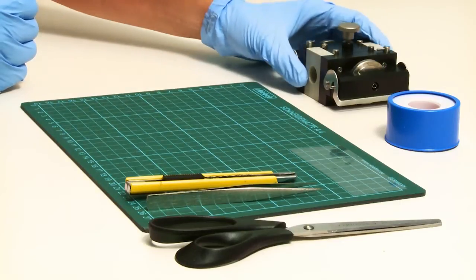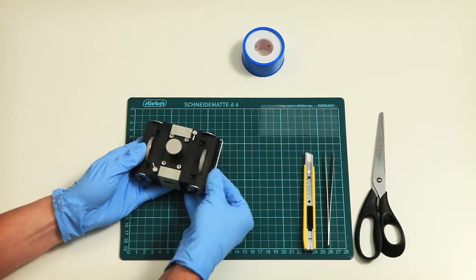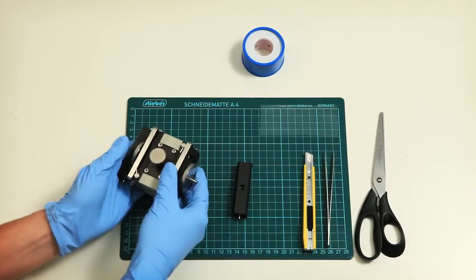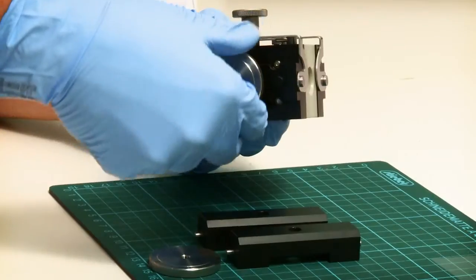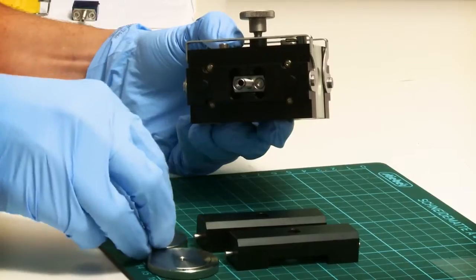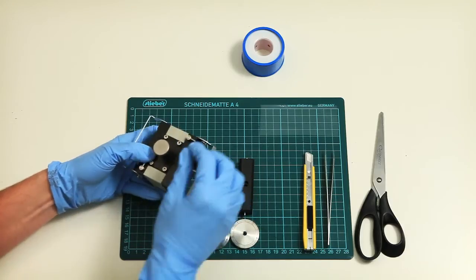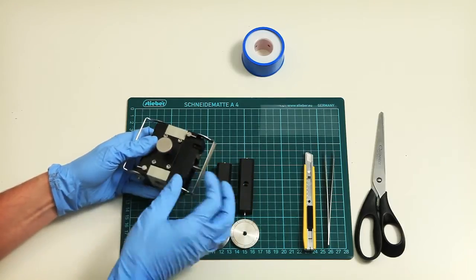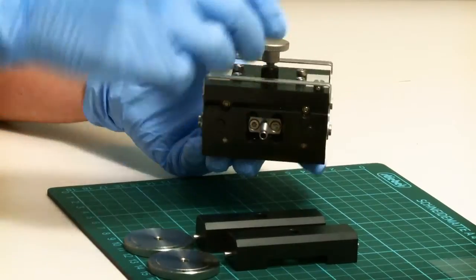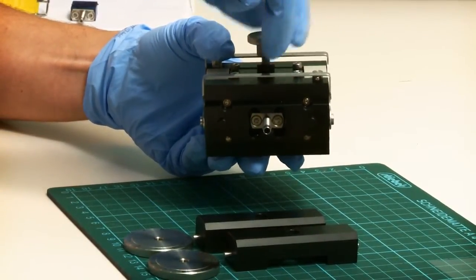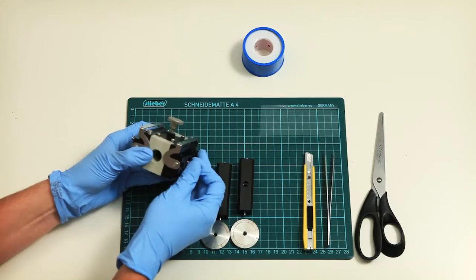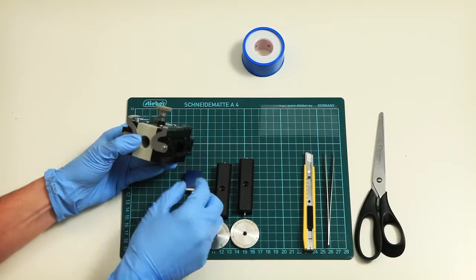First, you need to disassemble the cell. Open the clamps, remove the counterparts, remove the knurled nuts, open the pins for parallel adjustment, and make sure that the knob on top of the cell is loosened. Now you can pull out the two sample holders.